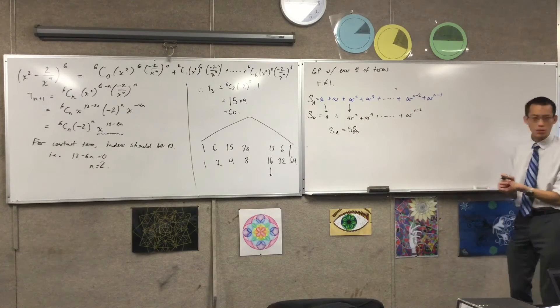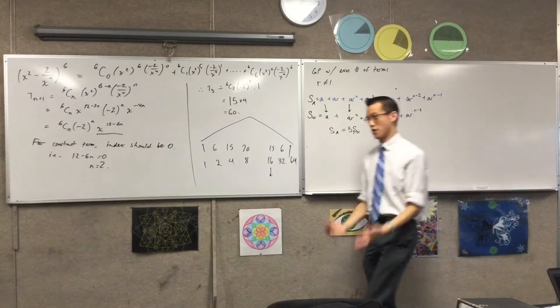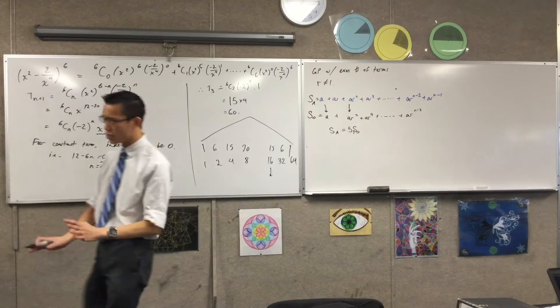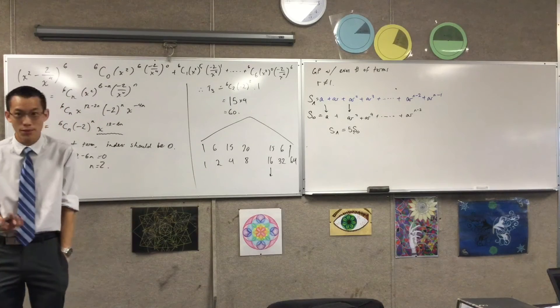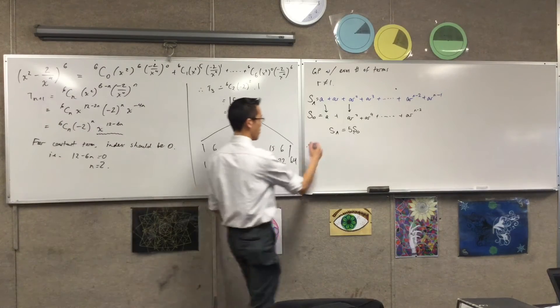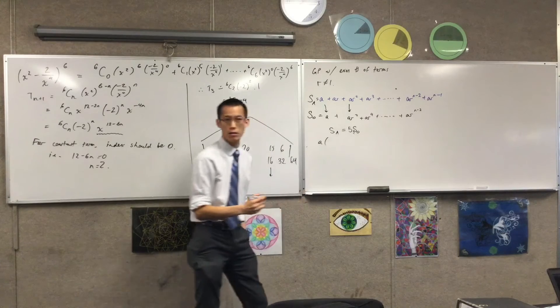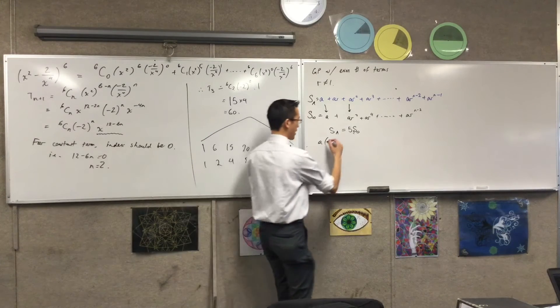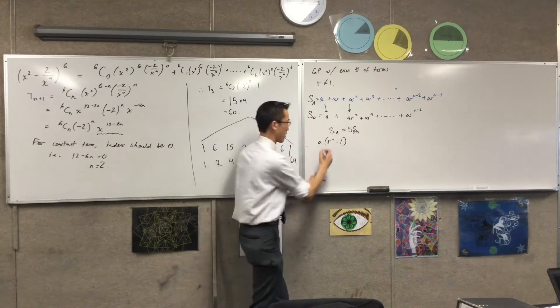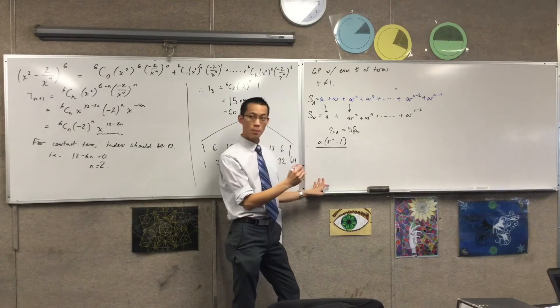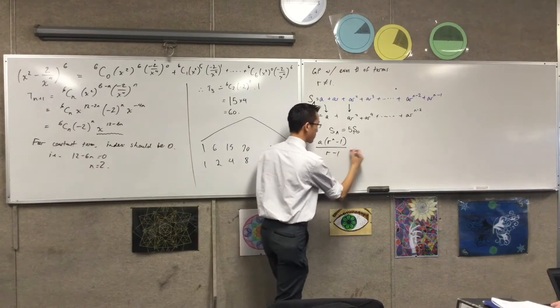So in order to unpack this, I'm just going to say, well, hold on. The first term is any GP. It's any GP at all. And I know what the sum of a GP is. It is A times what? Now, I can say this forwards or backwards. It doesn't really matter, right? But if I've got that on the numerator, then on the denominator I have...